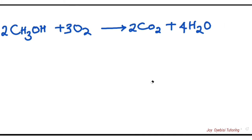Note that it is only the numbers in front of the molecules — the coefficients — that change when you are multiplying. The subscripts do not change. So now we have the balanced equation. The first step was to write the equation, the second step was to balance the equation.